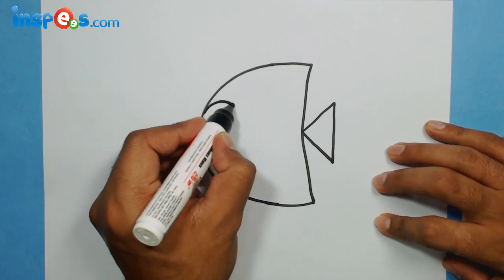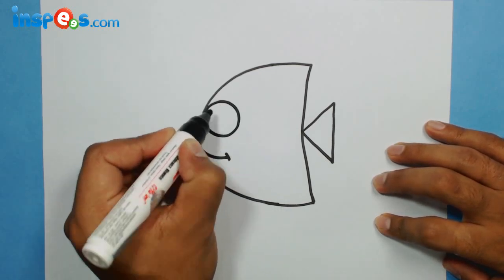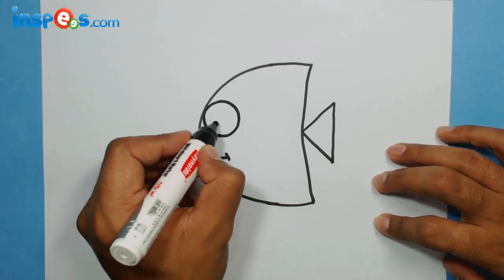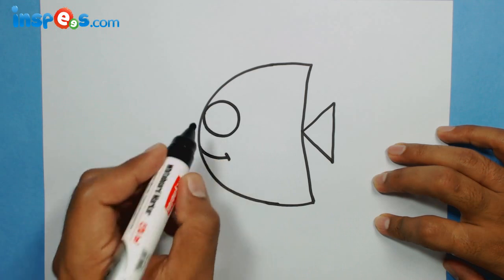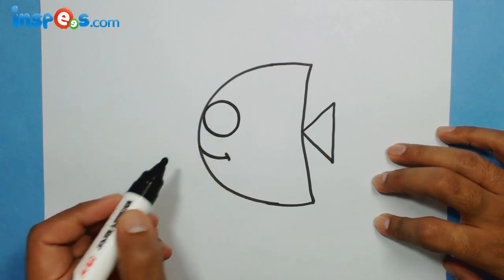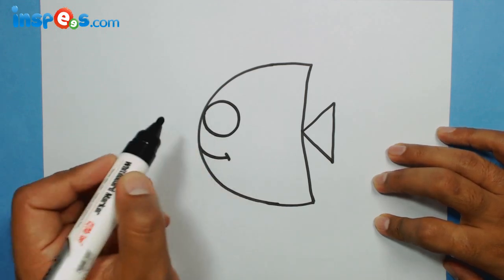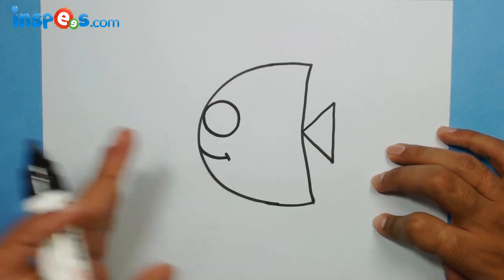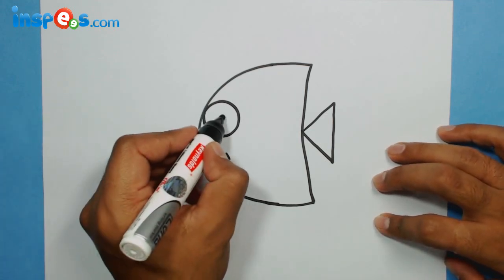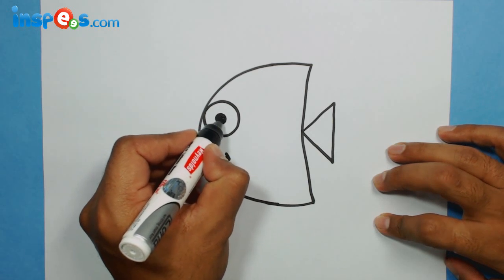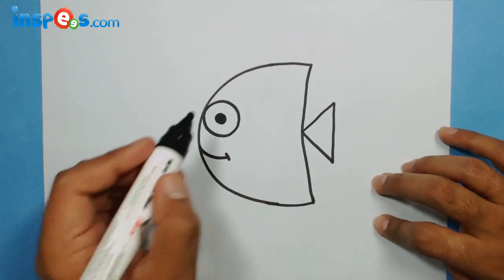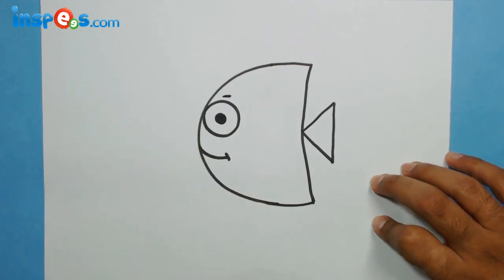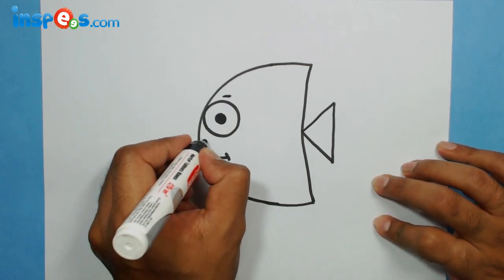Now we need an eyeball for the fish. It's up to you - you can make it in the center, or you can make it at the edge to make it look like it's moving. I'm going to make it in the center like this, a little eyebrow, and a small dot over here.